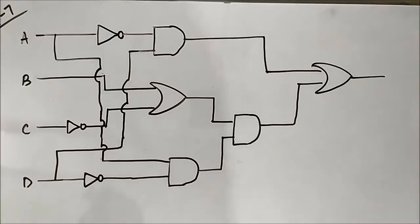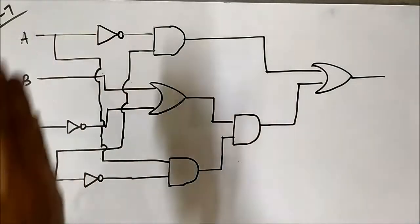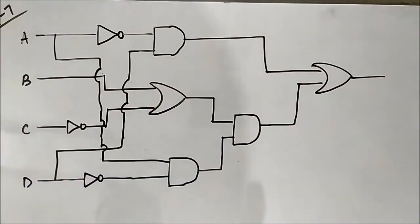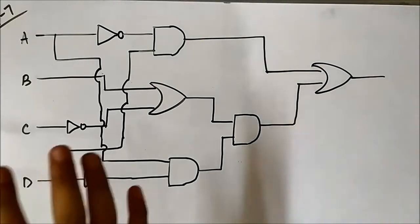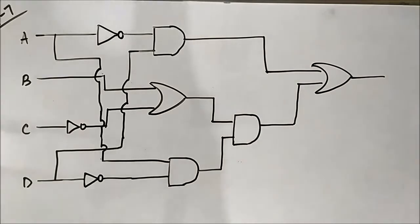Hello friends, this is the seventh question we will discuss about determination of the output of a logic circuit. We have this logic circuit and we have to determine the final boolean output. The approach will stay the same — we will divide this circuit into layers, solve each layer, and gradually move on to the final layer.